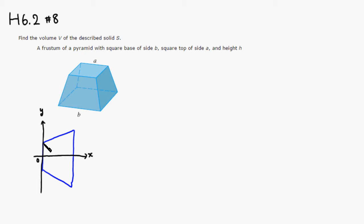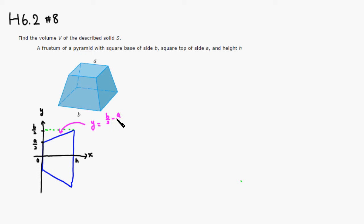Since this is A and I go through the middle, this is going to be A over 2 there. And this is half of B, so B over 2. To find the equation for this line, the slope is going to be rise is B/2 minus A/2, over run which is H. So the equation is y = [(B/2 - A/2)/H]·x + A/2.